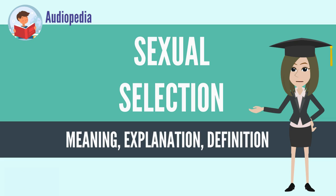Sexual selection can typically lead males to extreme efforts to demonstrate their fitness to be chosen by females, producing sexual dimorphism in secondary sexual characteristics, such as the ornate plumage of birds of paradise and peafowl, or the antlers of deer, or the manes of lions.